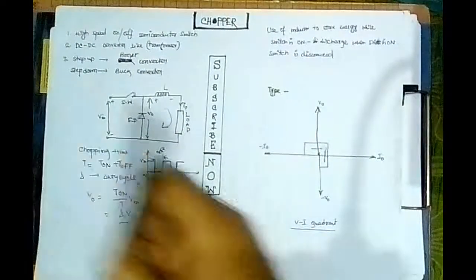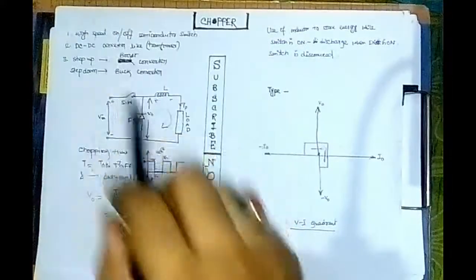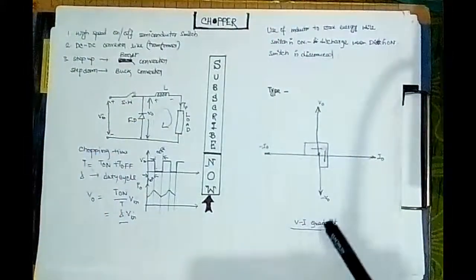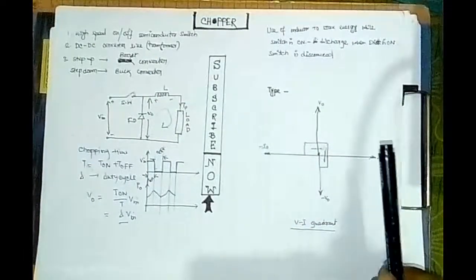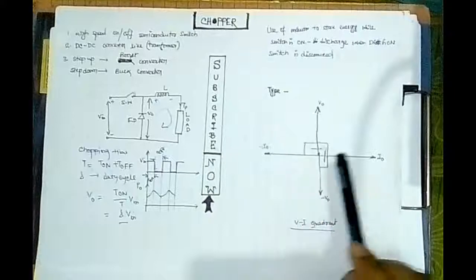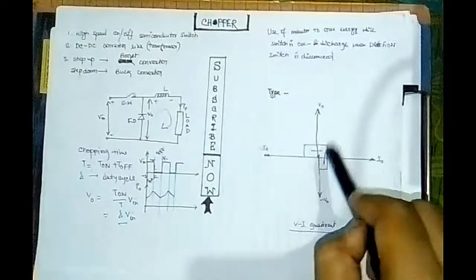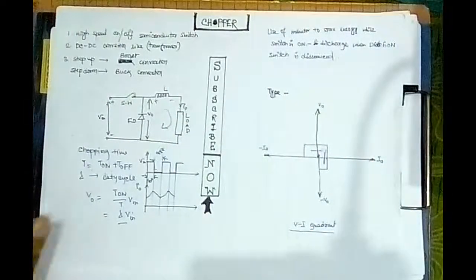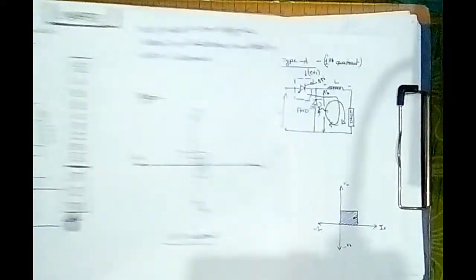As we have discussed before, what is a chopper and what is the basic diagram of a chopper and how the output waveforms of a chopper look like. Depending on that, the chopper is classified as first quadrant, second quadrant, third quadrant, or four quadrant choppers. But today we are going to discuss about Class B chopper.